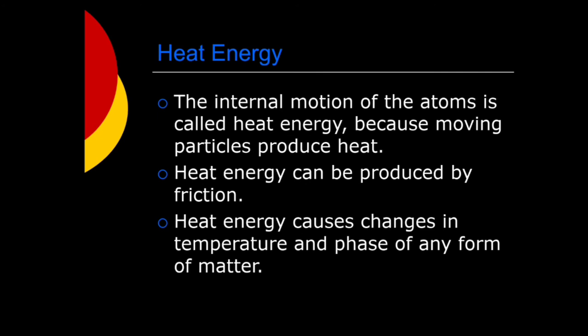The five main forms of energy are heat, chemical, electromagnetic, nuclear, and mechanical. What is heat energy? The internal motion of atoms is called heat energy because moving particles produce heat. Heat energy can be produced by friction. Heat energy causes changes in temperature and phase of any form of matter.